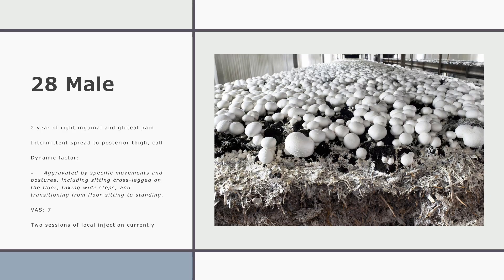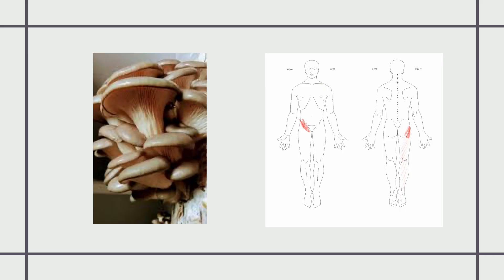I will present an extreme case of hip joint pain. The patient is a 28-year-old male foreign worker residing in South Korea for the past three years, employed in a mushroom spawn cultivation facility. He presents with a two-year history of chronic right inguinal and gluteal pain, which intermittently radiates down the posterior thigh and, during severe episodes, extends to the calf. We focused on the long history of inguinal pain.